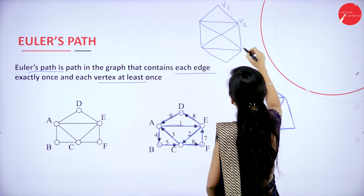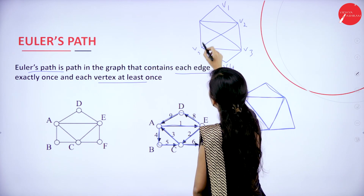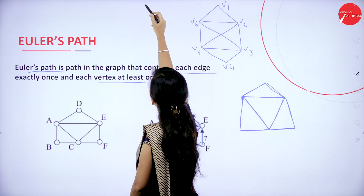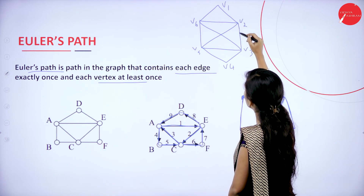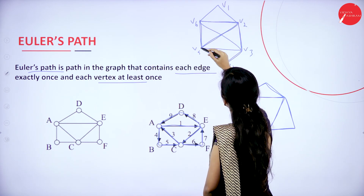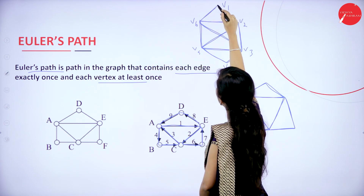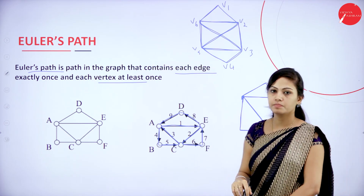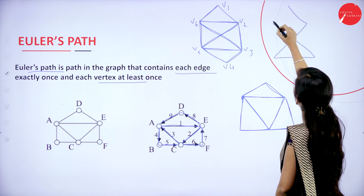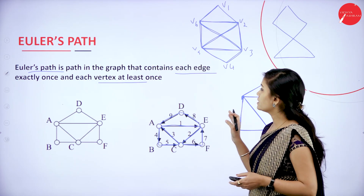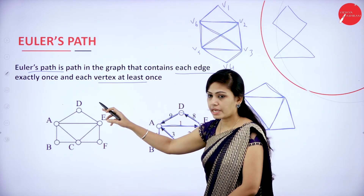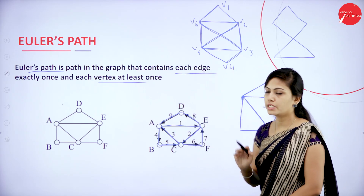I have started from V1, V2, V3, V4, V5, V6 and the edges. I will repeat: V1 to V2, then V3, V4, V5, V6, then V1. This is an example for Euler's path. It contains each edge exactly once and each vertex at least once. That is called as Euler's path.